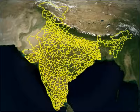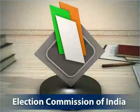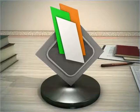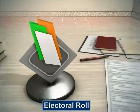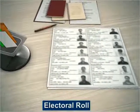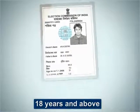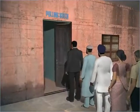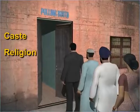Once the electoral constituencies are finalized, the Election Commission of India, the principal body responsible for conducting elections, draws up an electoral roll or voters list. This list contains the names of those who are eligible to cast a vote in the elections. In India, every citizen aged 18 years and above has the right to exercise their vote in an election regardless of his or her caste, religion, or gender.